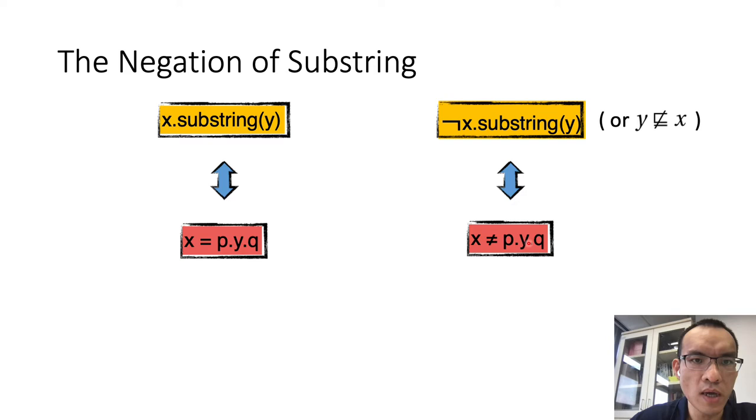This naive idea is however wrong. We look at this simple example. X is equivalent to AAB, Y is AB, P is C, Q is C, C. This is a good model for this equality. You see, X is AAB, is not equivalent to C, A, B, C, C. This is okay. However, in this case, Y is a substring of X.